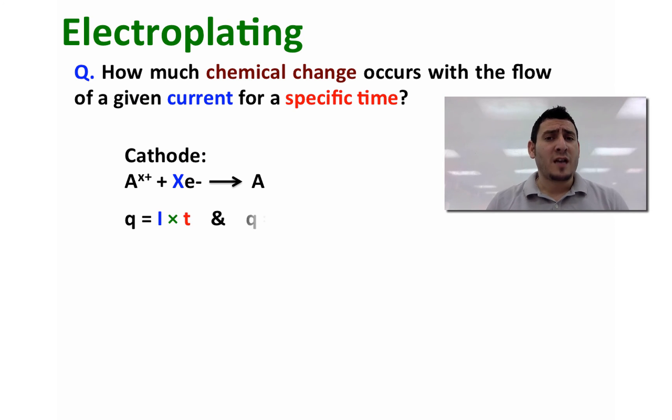We can calculate the amount of charge by multiplying the current intensity, which is in amperes, by the time, which is in seconds. We know previously that the amount of charge is equal to the number of mole electrons multiplied by Faraday's constant, where Faraday's constant equals 96,485 coulombs per mole electrons.